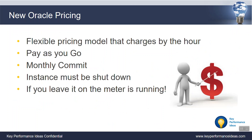Let's take a look at Oracle pricing. All the pricing I'm talking about today is simply list pricing pulled straight from the web, available on the Oracle website. Oracle has a new flexible pricing model that charges by the hour. They have two versions: the pay-as-you-go model and the monthly commit model. The instances must be shut down — if you leave it on overnight, that meter's running. In order to stop being charged, you have to stop your instance.